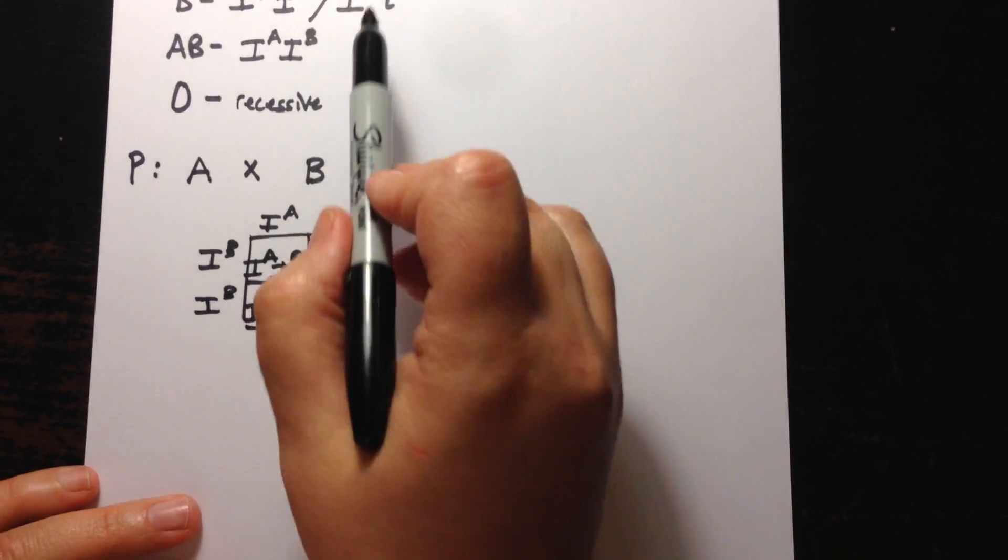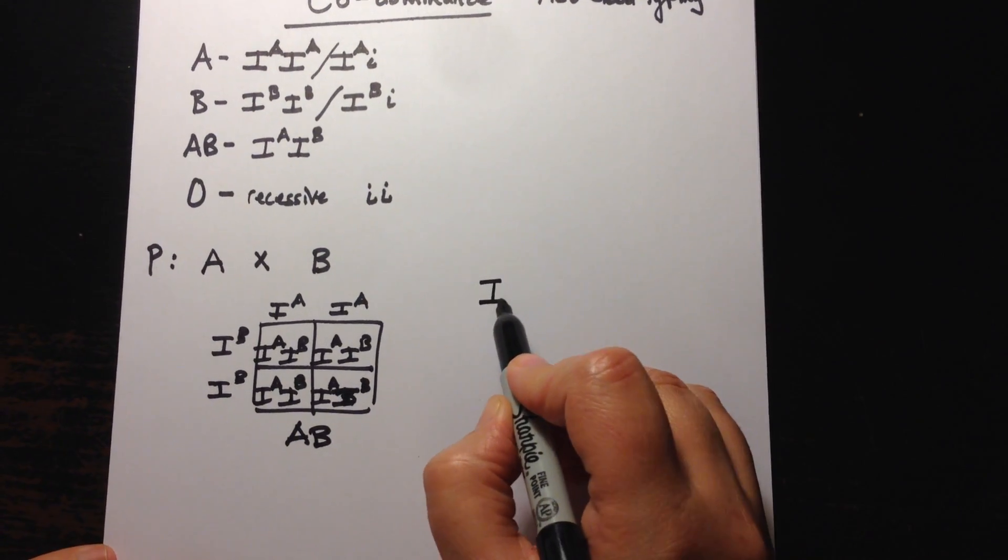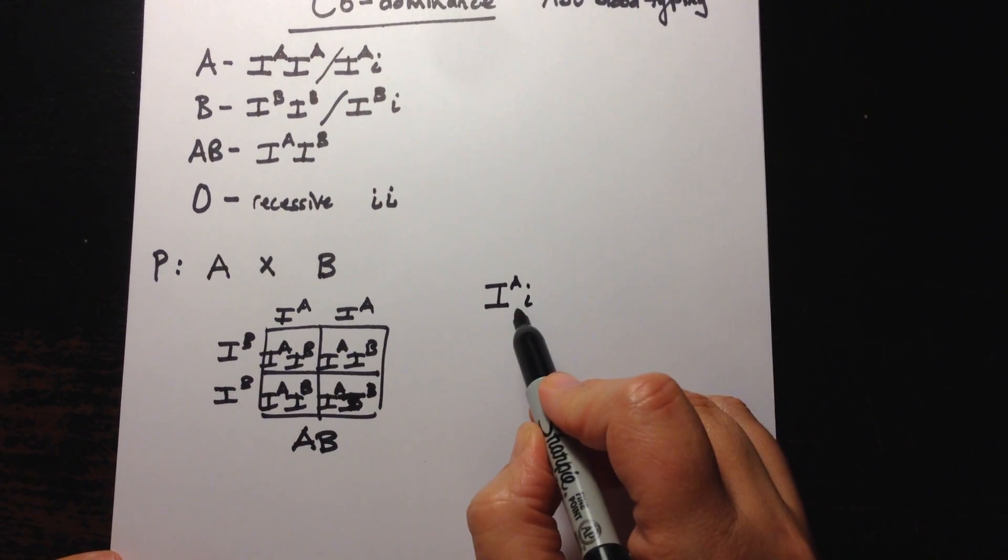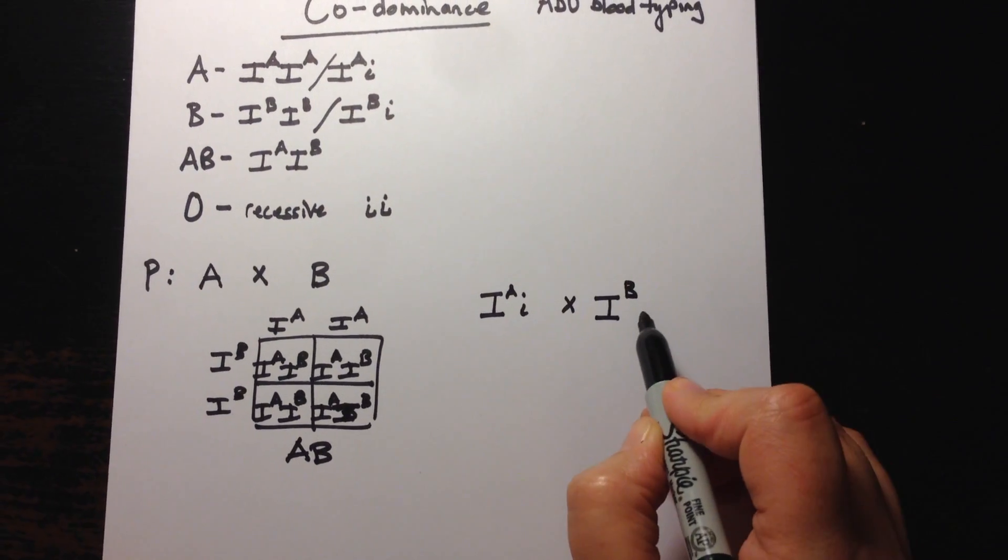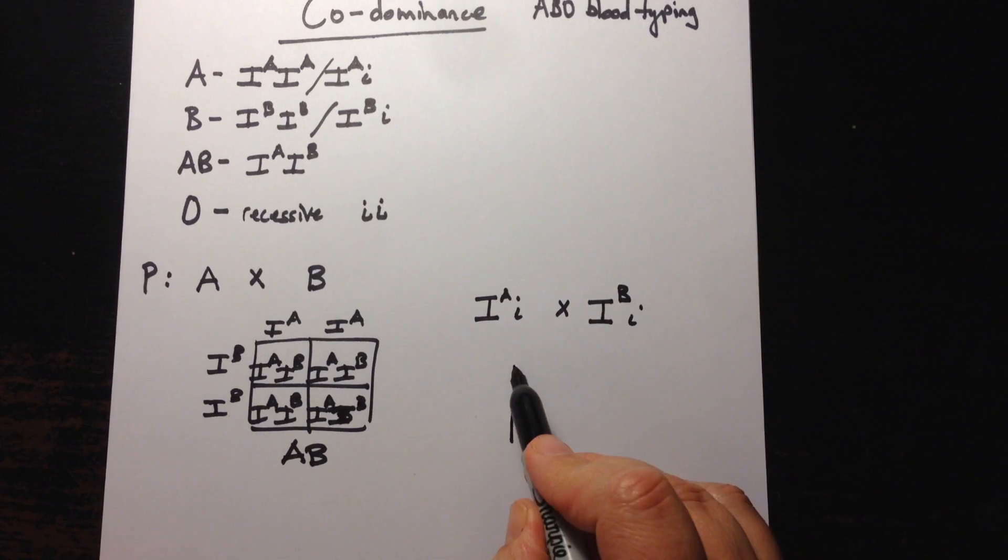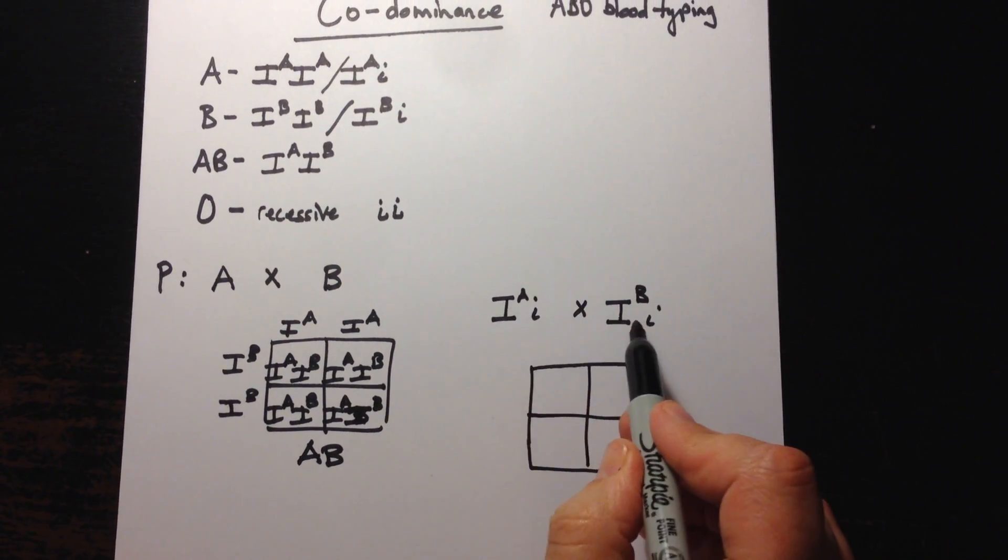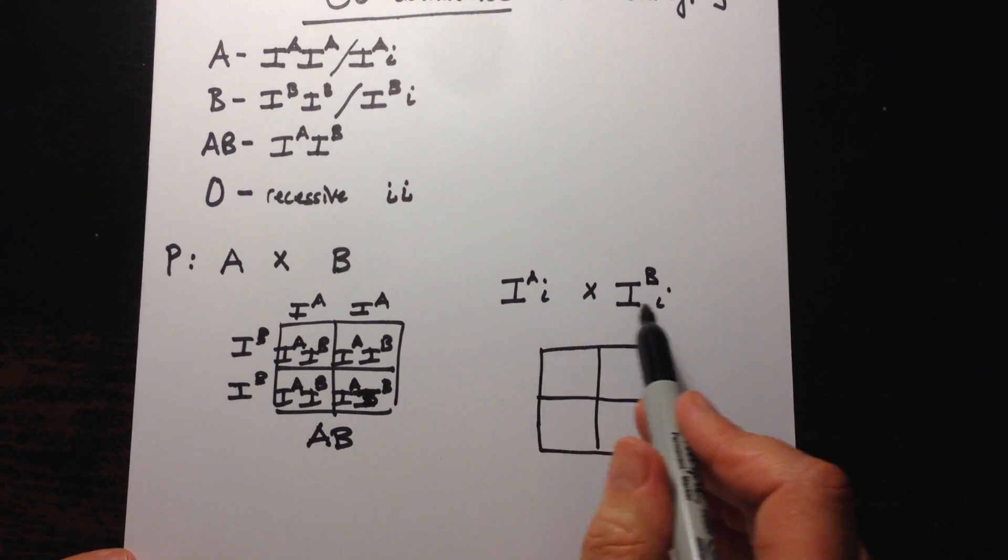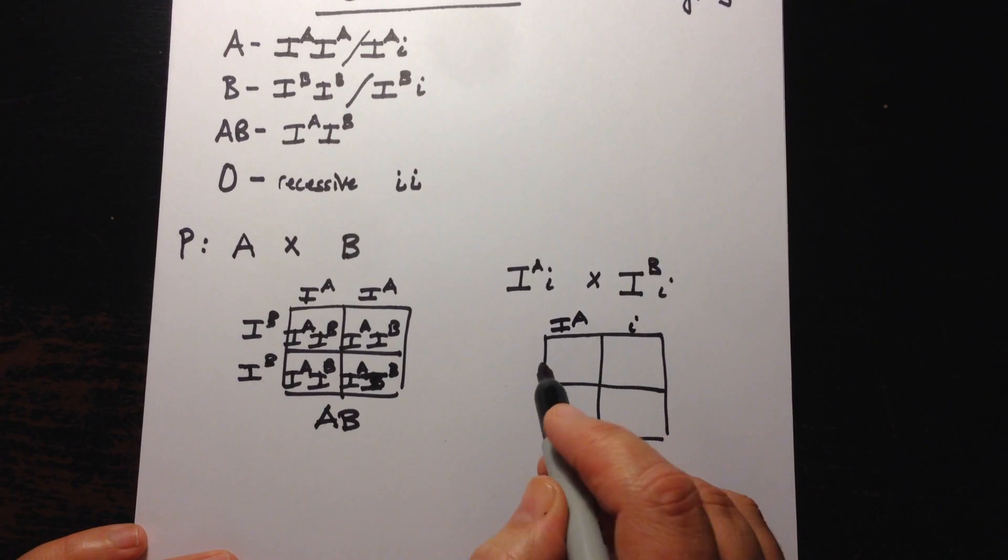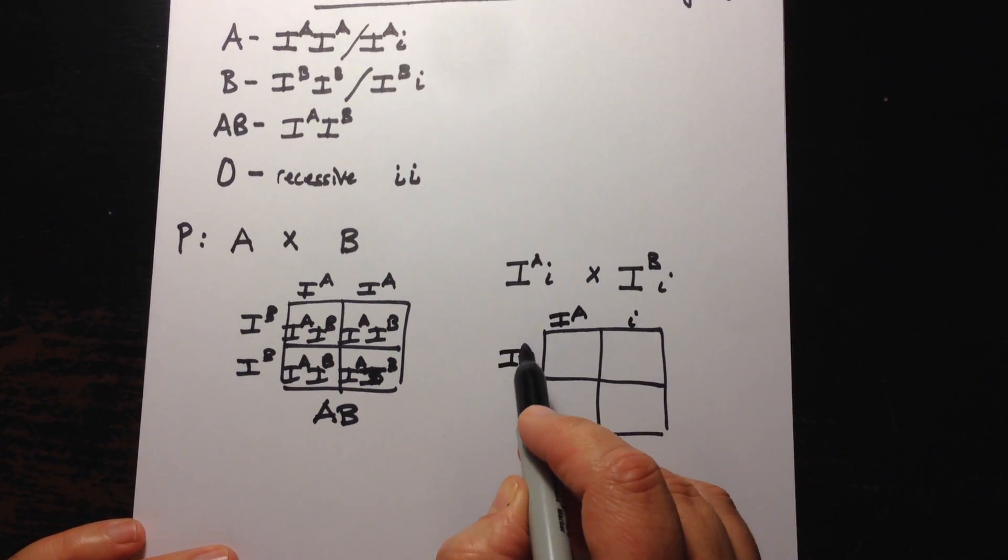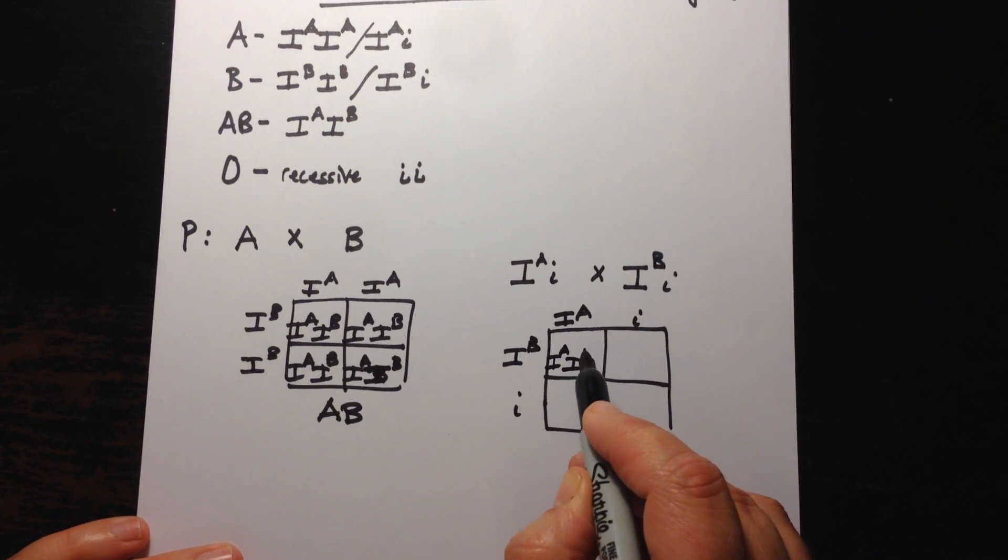But now if we consider these other genotypes, what if we have this kind of type A blood crossed with this type of type B blood? Let's look at that scenario. So we're looking at the two heterozygous type of type A and B blood. So we're going to put those alleles here for the two parents and now we do the same thing. We combine them in the Punnett.